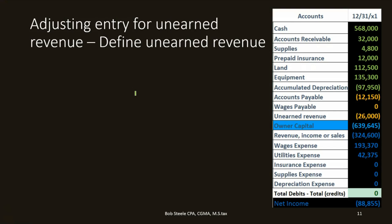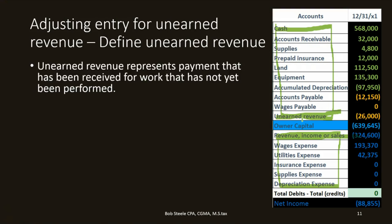For adjusting entries related to unearned revenue, the balance sheet account is unearned revenue, and the income statement account is revenue. Revenue has a credit balance and only goes up, so we increase it with another credit. If we credit revenue, we must debit unearned revenue. So we can determine the direction of the entry — debit unearned revenue, credit revenue — just by going through those questions, before even knowing the details of why.